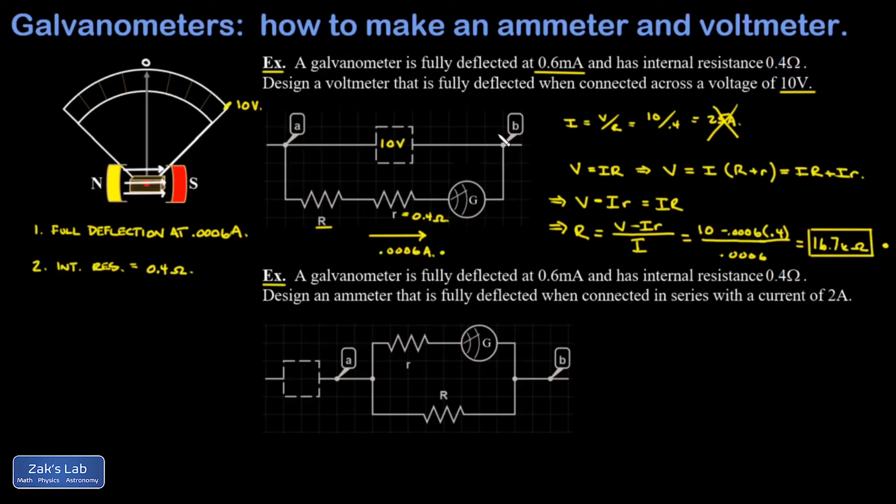In the second example, we want to use the same galvanometer as an ammeter. Ammeters need to be connected in series with the circuit, so you can watch all the current flow through the ammeter and measure how much there is.